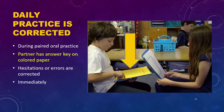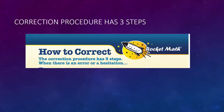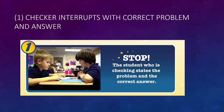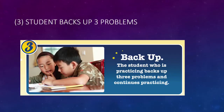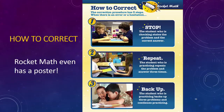If the student hesitates before saying an answer or makes an error, the checker follows a specific three-step correction or teaching procedure. Step one, the checker interrupts to state the problem and the correct answer. Step two, the checker has the student repeat the problem and the correct answer three times. Three, then the student backs up three problems on the worksheet to give it another try. You'll need to model and teach these procedures to the students before they can start practicing. This three-step correction procedure, especially for hesitations, really helps the students learn whatever fact they're weak on.